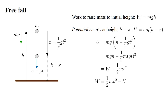All three terms have units of joules, the unit of work, and of what we will call energy, as in the potential energy u. This expression leads us to define the kinetic energy of the mass, denoted by the letter k, as one-half mv².